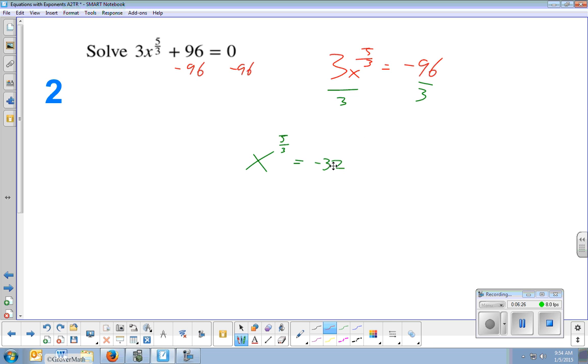and it equals negative 32. To get rid of this ugly exponent of 5 thirds attached to my variable, because I don't want x to the 5 thirds. I want x to the first. All right, I just want x. I'm going to multiply both sides. Not multiply both sides. I'm going to raise both sides by the reciprocal 3 fifths. So raise this to the 3 fifths.